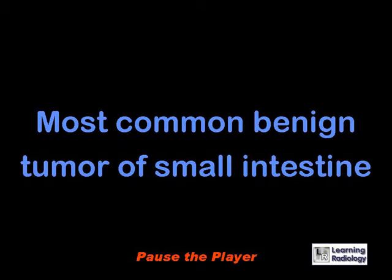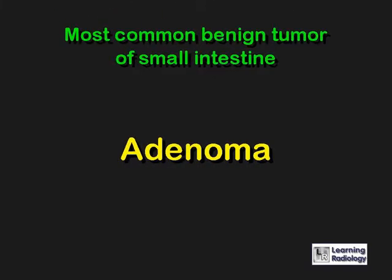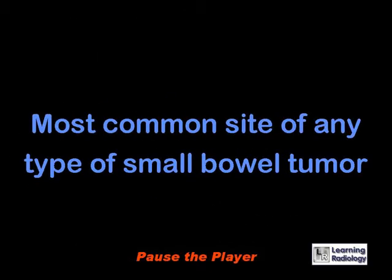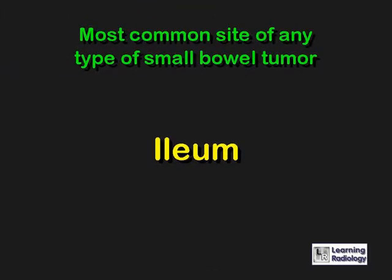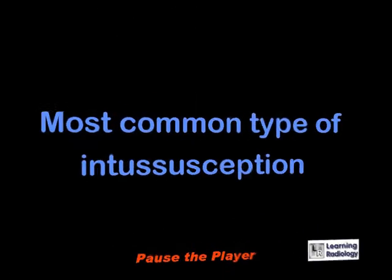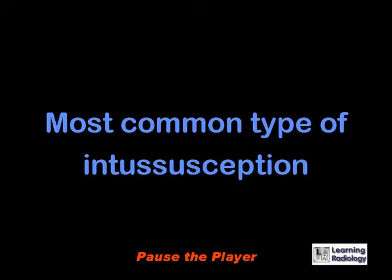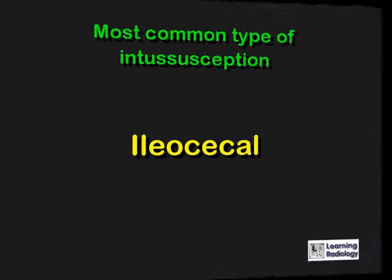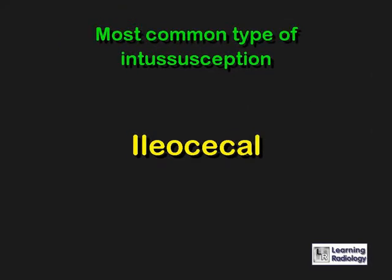What is the most common benign tumor of the small intestine? Adenomas. What is the most common site of any type of small bowel tumor? The ileum. What is the most common type of intussusception? An ileocecal intussusception.